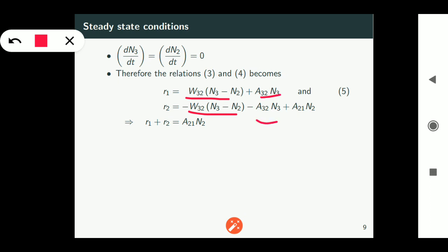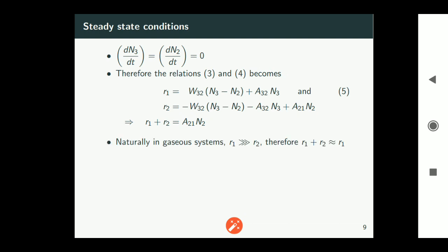Similarly these two will get cancelled. So the only left out term is a21*n2. So if you add equation 5 which is for r1 and equation for r2 you get r1 plus r2 equals a21*n2.